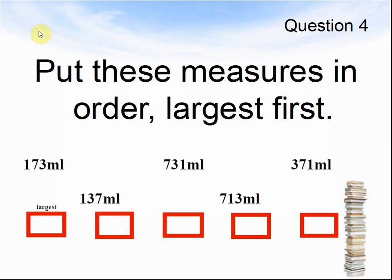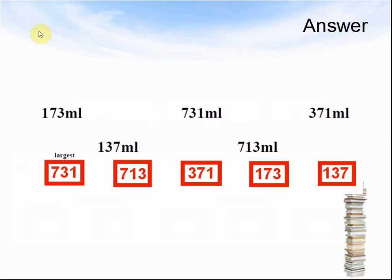Question 4. Put these measures into order, largest first. Pause to solve this question. The answers: 731 was the largest, then 713, then 371, then 173, then 137.